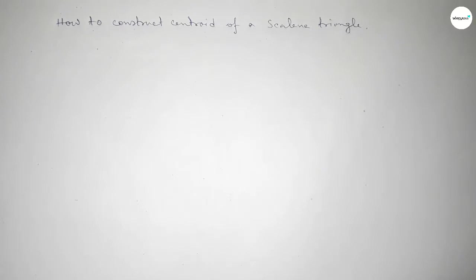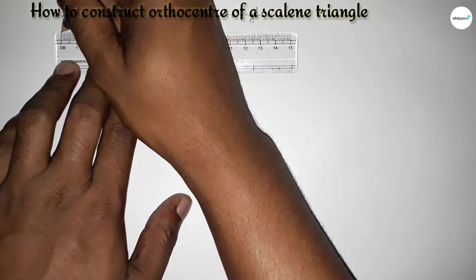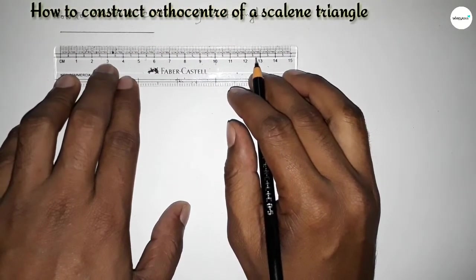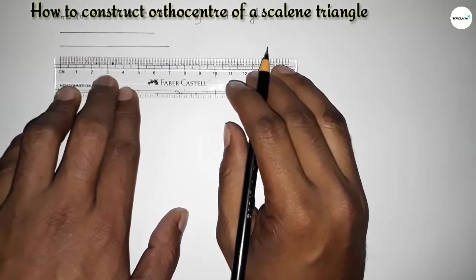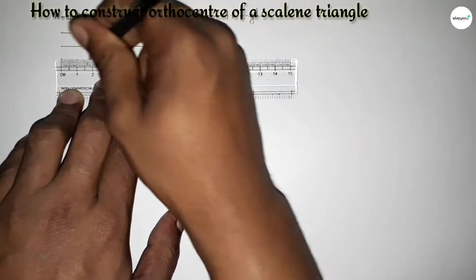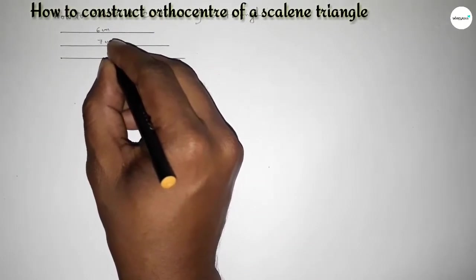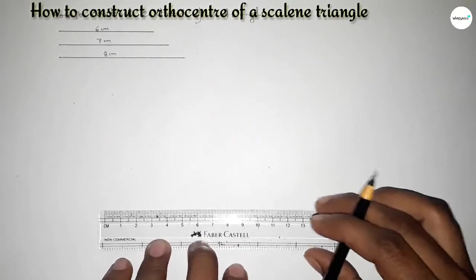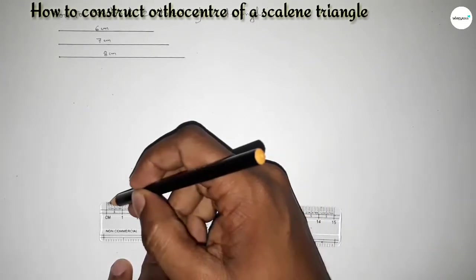So first, drawing here a scalene triangle. Drawing here the three sides of this triangle — first a line of length six centimeters, then a line of length seven centimeters, and last a line of length eight centimeters to construct the scalene triangle. So this is six centimeters, this one seven centimeters, and this one eight centimeters.